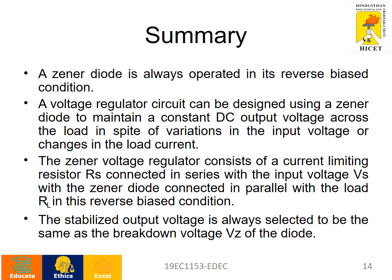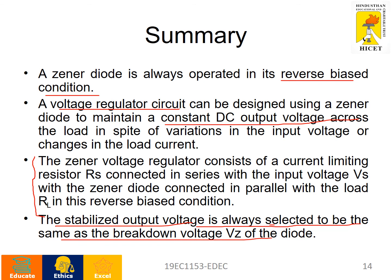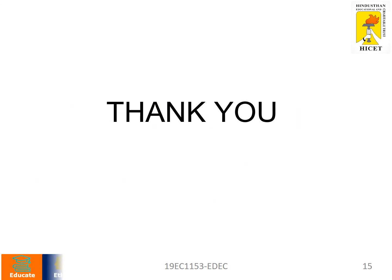In summary: a zener diode is always operated in reverse bias, and it can act as a voltage regulator to maintain a constant DC output voltage. For practical applications, it must be correctly connected — either in series or parallel as required — to produce a stabilized output voltage. The selected zener voltage is always chosen to be equal to the desired breakdown voltage. Thanks for watching this presentation.